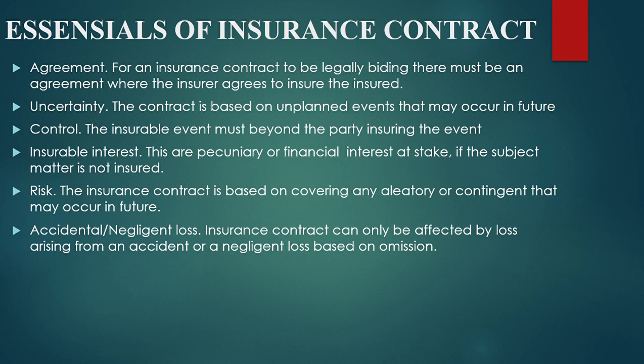Another essential element is insurable interest: these are pecuniary or financial interests at stake if the subject matter is not insured. Another essential element is risk: the insurance contract is based on covering any aleatory or contingent event that may occur in future. Another essential element is accidental or negligent loss: an insurance contract can only be effected by losses arising from accident or negligent acts based on omission.